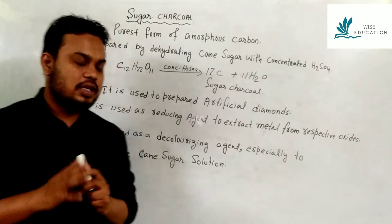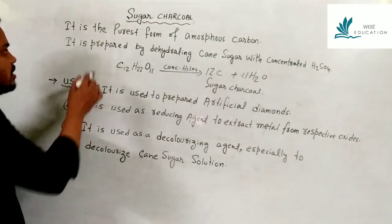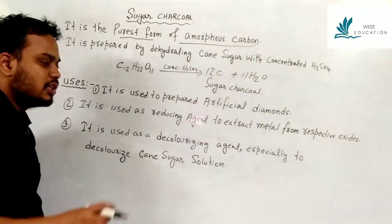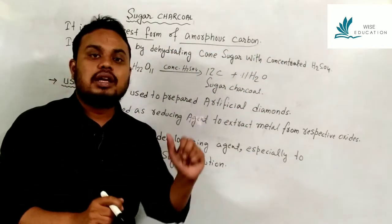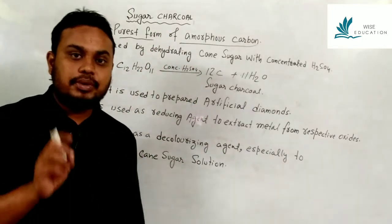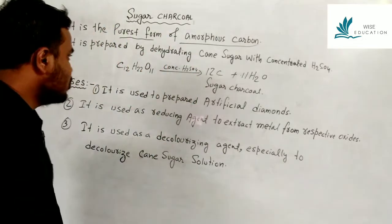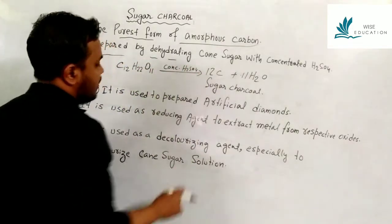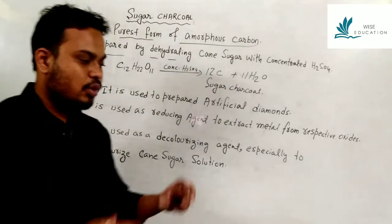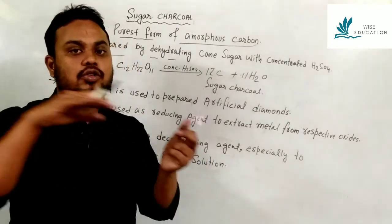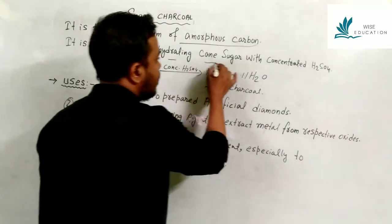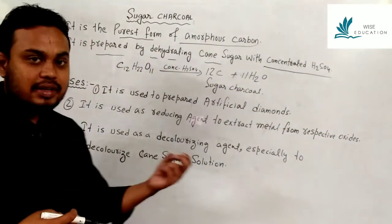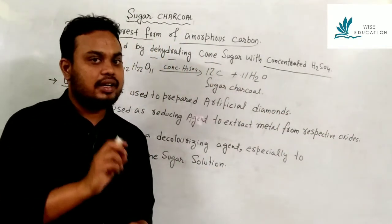Sugar charcoal is the purest form of amorphous carbon. It is prepared by dehydrating sugar cane with concentrated H2SO4 (sulfuric acid), which acts as a dehydrating agent to remove water molecules from the sugar.